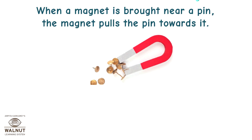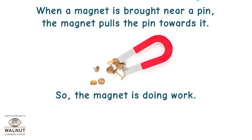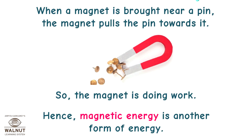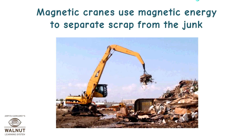When a magnet is brought near a pin, the magnet pulls the pin towards it. So the magnet is doing work. Hence, magnetic energy is another form of energy. Magnetic cranes use magnetic energy to separate scrap from junk.